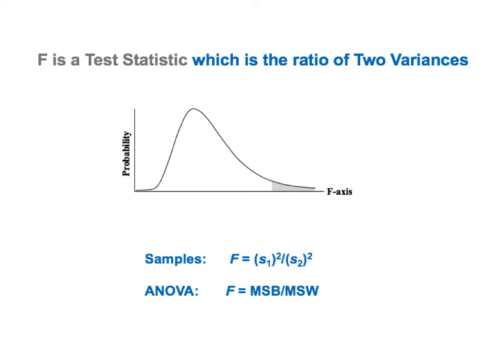S sub 1 is the symbol for the standard deviation of the sample from population or process 1, and S sub 1 squared is its variance. And the same is true for sample 2. So for two samples, F equals the variance of sample 1 divided by the variance of sample 2.